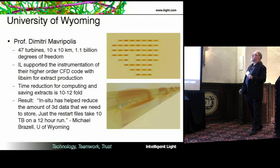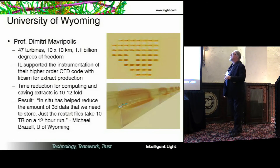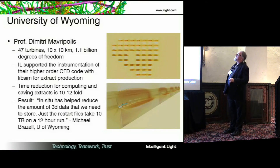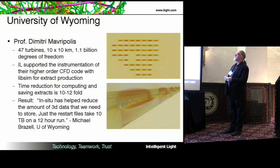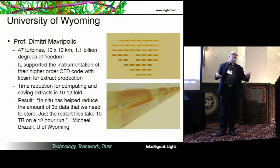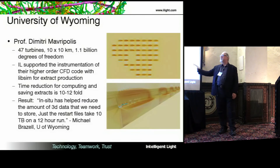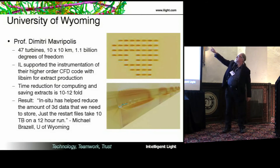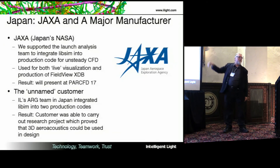University of Wyoming — we talked this morning about wind turbines. Here's 47 being simulated now, in a 10 by 10 kilometer domain with 1.1 billion degrees of freedom. They have their own higher-order CFD code and are saving about 10 to 12 fold in compute and storage. To give you an idea, here's 10 terabytes for 12 hours — and they want to take in weather from the atmospheric boundary layer and run for days, so the data size is huge. That's a top view of the layout of the 47 wind turbines.